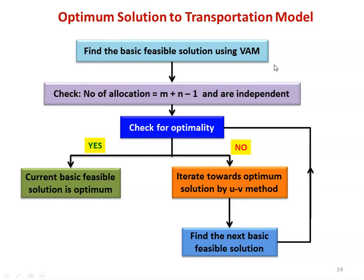Then we have to check that the number of allocations equals m plus n minus 1 and are independent — independent means they should not form a closed loop. Here m is the number of rows (sources) and n is the number of columns (destinations), so m plus n minus 1 is the number of allocations required. Then we check for optimality. There is a mathematical technique to check optimality, producing a cell evaluation matrix. If the cell evaluation matrix does not have any negative value, then the optimality condition is satisfied and the current basic feasible solution is optimum.